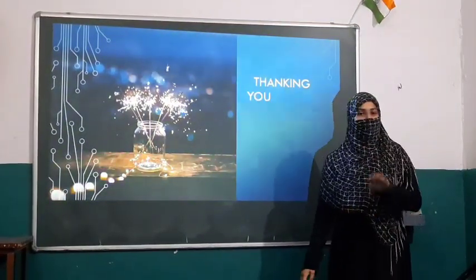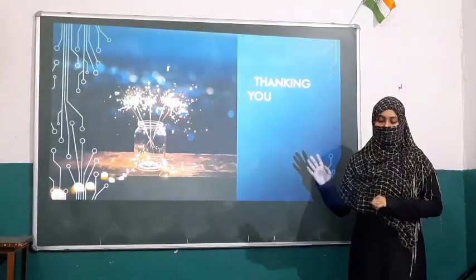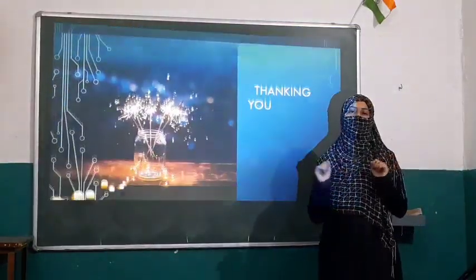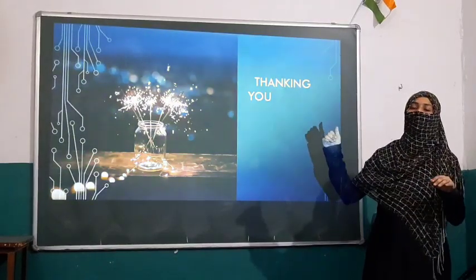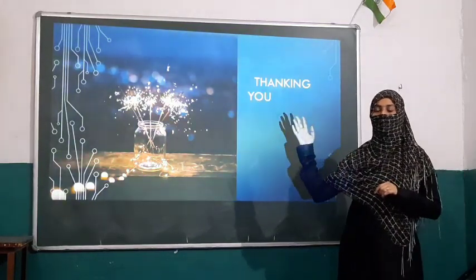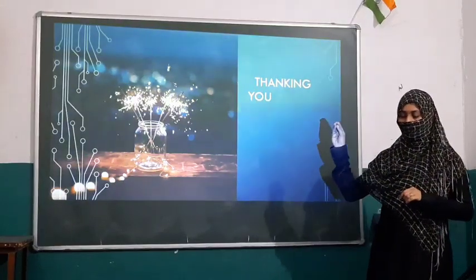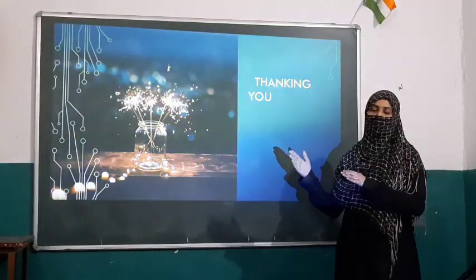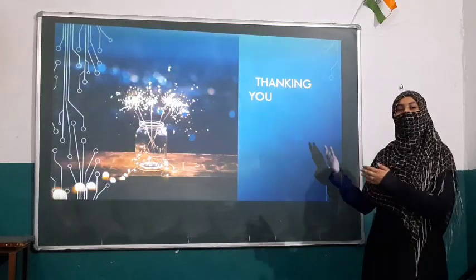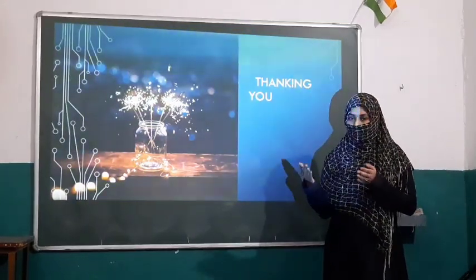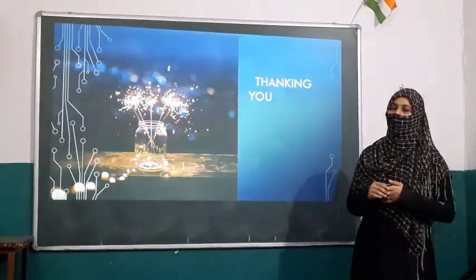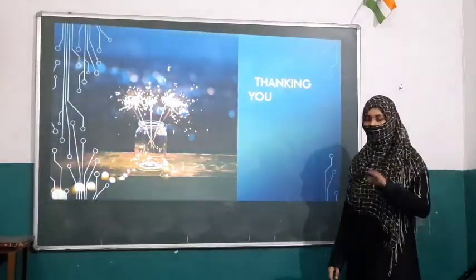Thank you. I hope you all have understood today's topic. Let us review once again. Today we discussed the plant kingdom, and in the plant kingdom there are five types of plants: number one is trees, the second is shrubs, third is herbs, the fourth is creepers, and the fifth is climbers. I suggest you all take out your science book and read the first chapter. I hope I have been able to clear your confusion. Thank you all, Allah bless, and I will meet you in my next video. Bye.